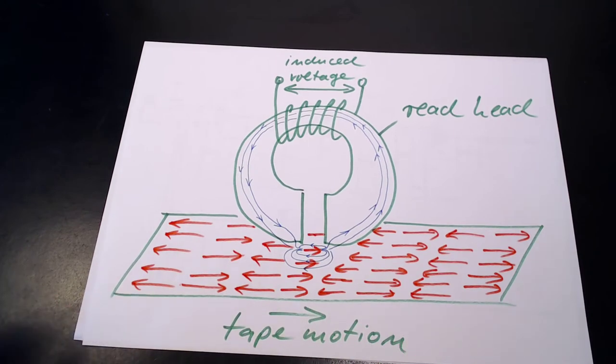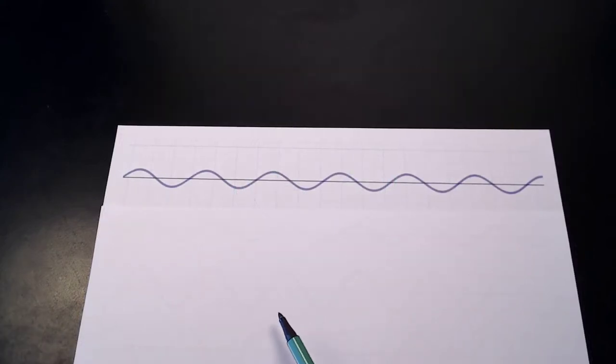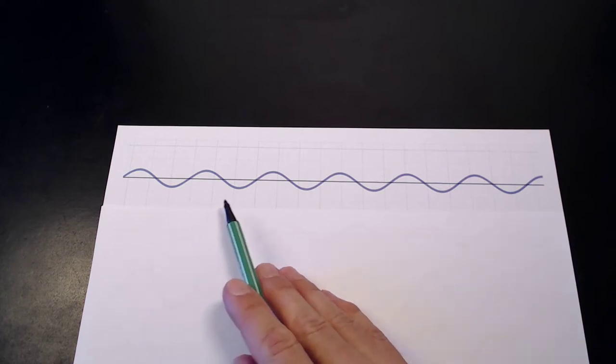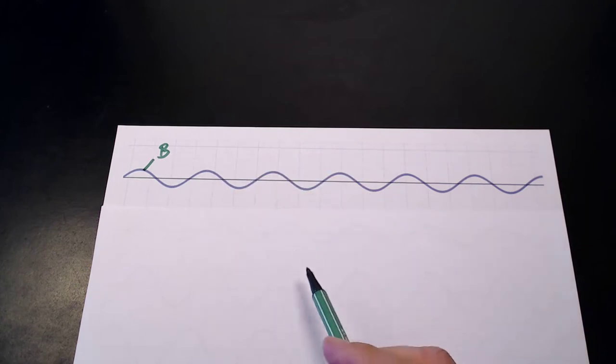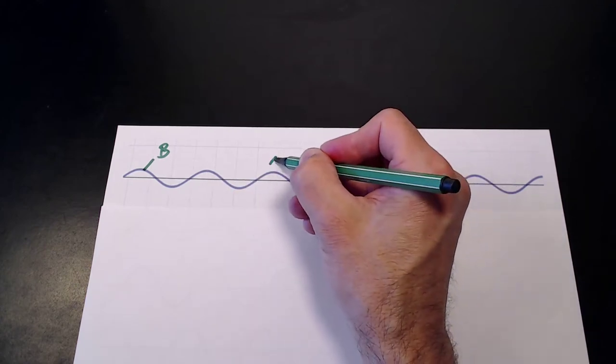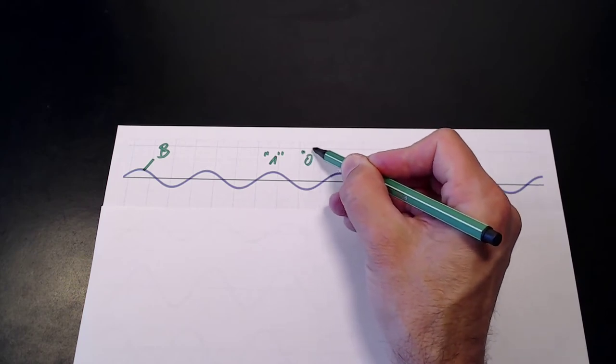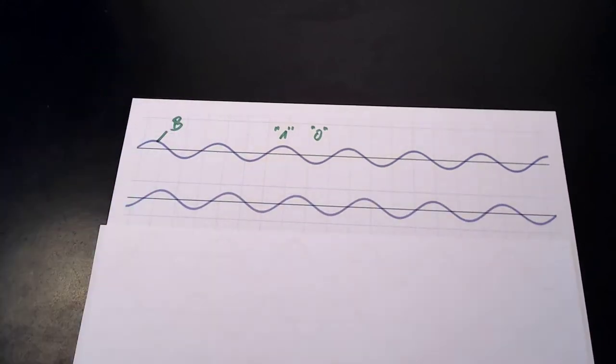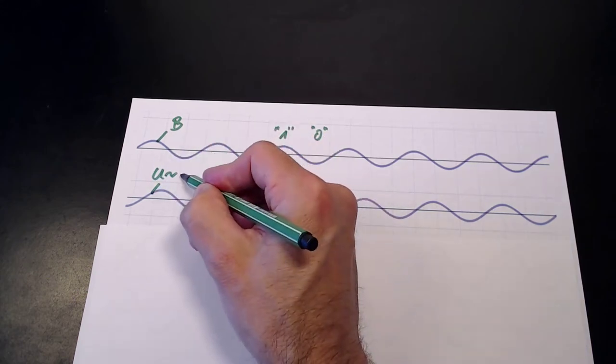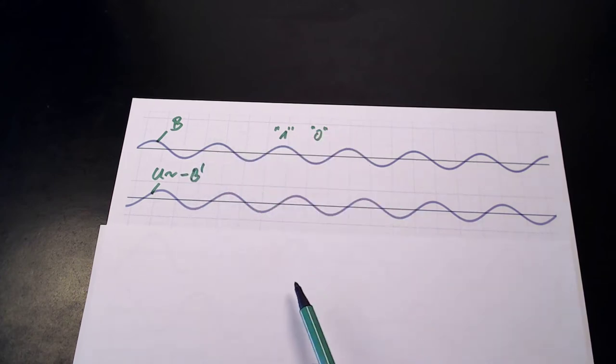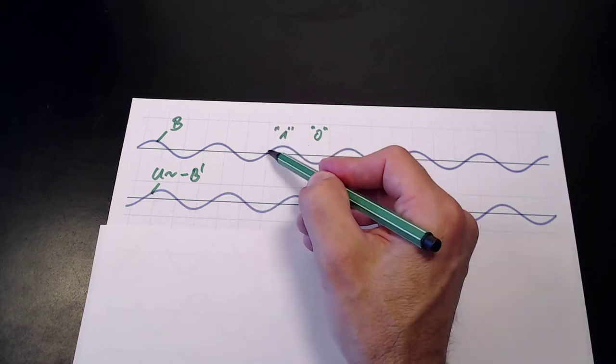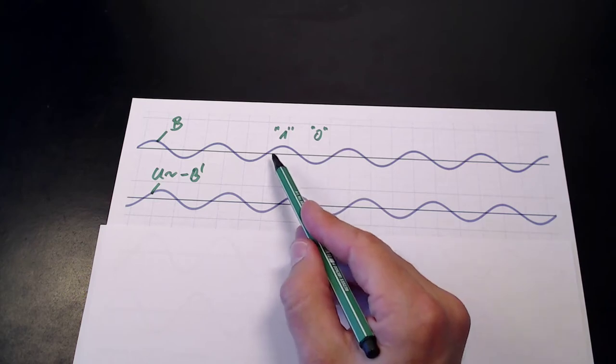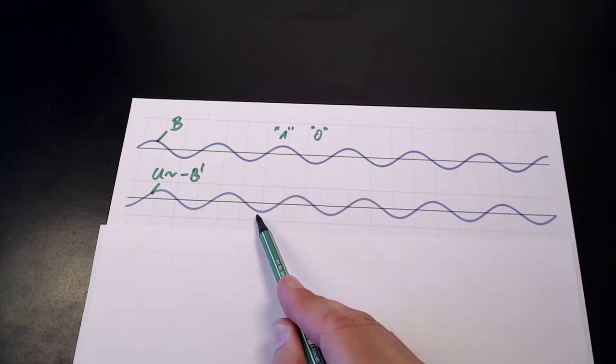Let's take a look at an example. Let us assume that our tape, when moving past the read head, shows a magnetic field B like so. So this is maybe a 1 and this would be a 0 we have written. Now below, I have drawn our induced voltage U being proportional to the negative rate of change in B. Let's write U proportional to minus B'. As you can see, a positive slope in B corresponds to a negative value in our voltage and vice versa.